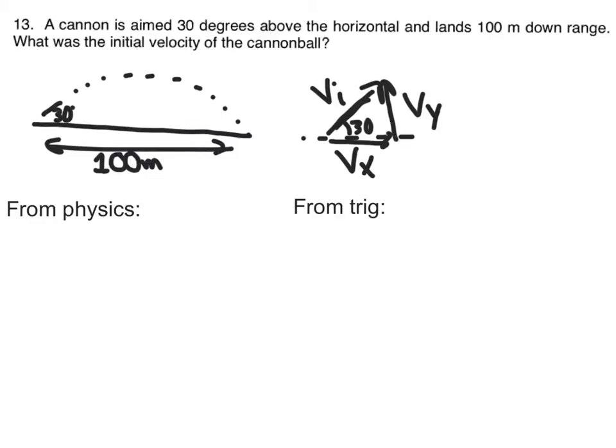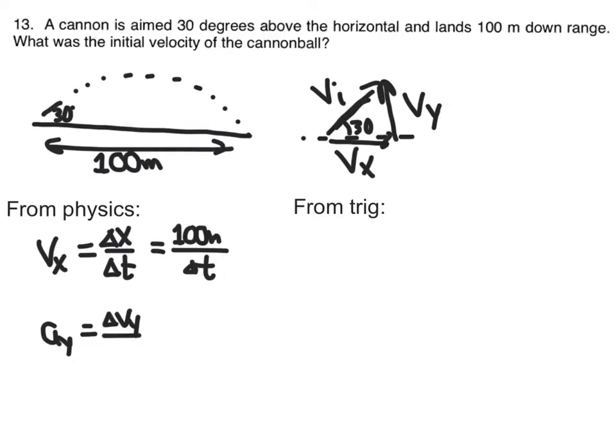From physics, we know that that horizontal motion down the field is just going to be the distance divided by the time. So we can say that's going to be 100 meters over whatever the time is. We also know that Vy, there's some acceleration in the y direction that's going to change the y velocity over time. From a previous video, we've reduced this and said that Vy is 9.8 meters per second squared times delta T over 2.